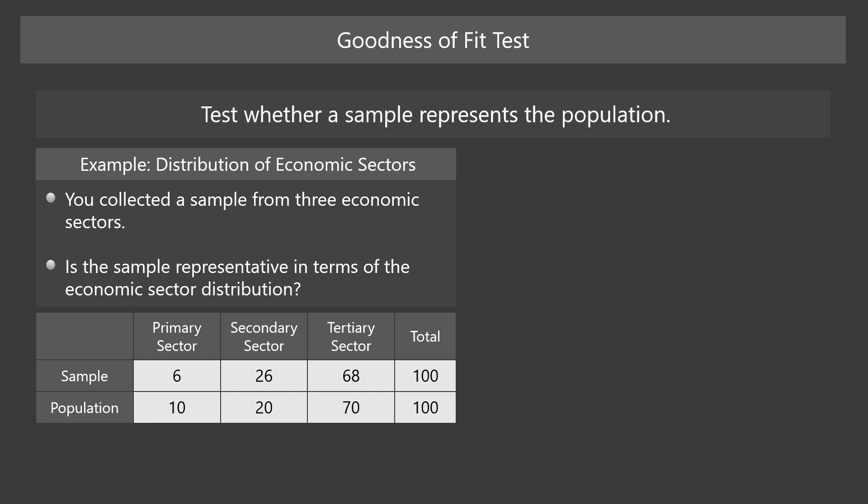Let's consider an example. Suppose you collect sample data of companies from three economic sectors: the primary sector, the secondary sector, and the tertiary sector. The table shows the percentage of companies belonging to each category. Suppose you want the sample to represent the economic sector distribution in this area. We know the population distribution, that is, the sector distribution in this area. In this case, can we say that the sample is representative in terms of the economic sector distribution?